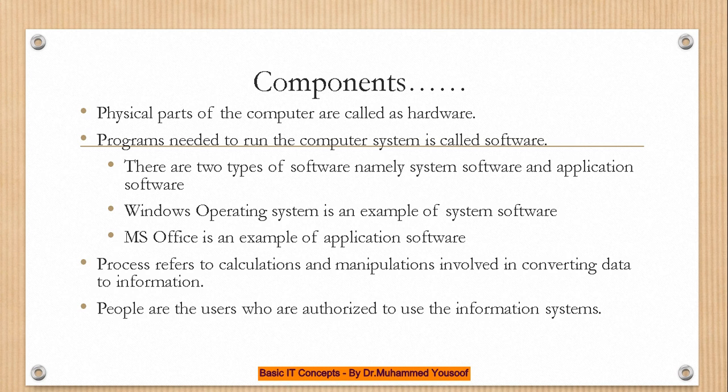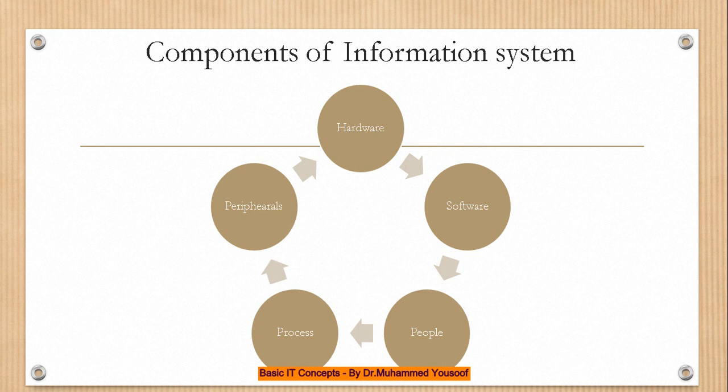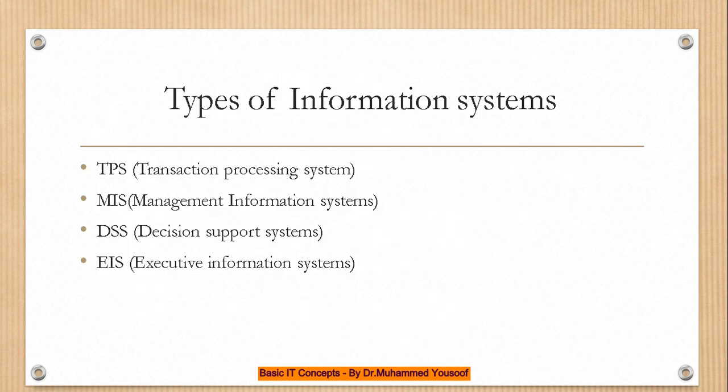Process refers to the calculations and manipulations involved in converting data into information. As mentioned, the basic cycle starts with input (data) and produces information as output. People are the users who are authorized to use the information system. For example, if you are a university student you are authorized to use the information system of Dhofar University; if you are not a student, you have no access. These are the five components of the information system.